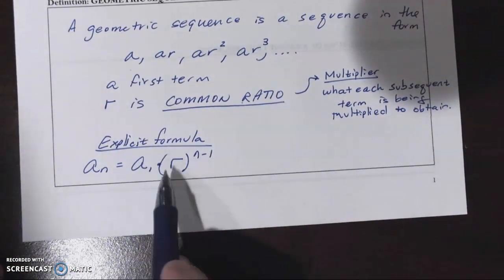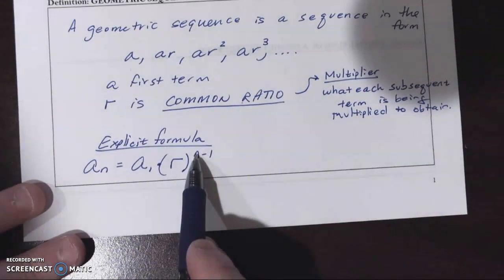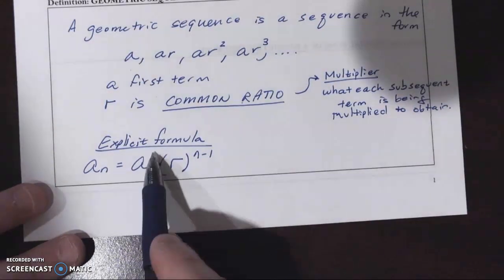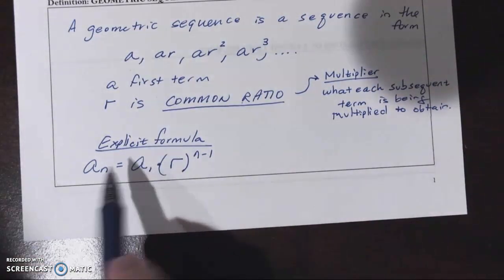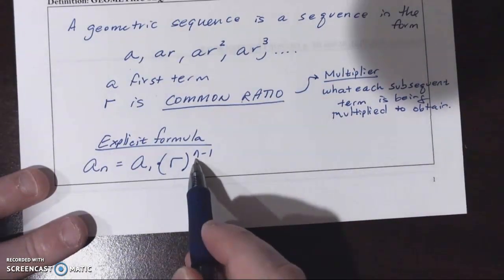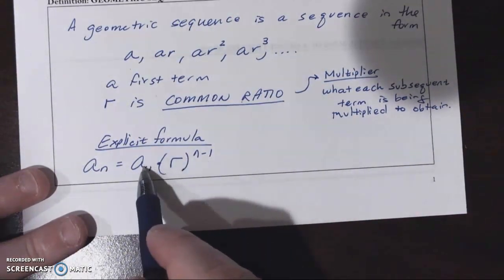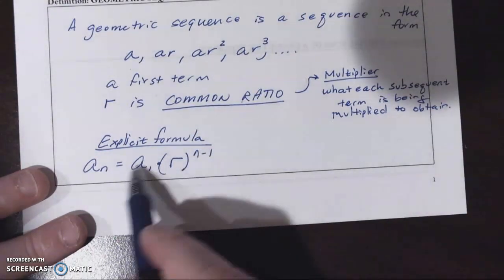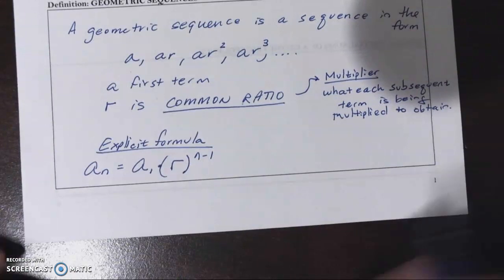So if we plug in the first term, the one would go there, one minus one is zero, R to the zero power goes away, which is why we would just be left with the first term. So that makes a lot of sense. If it was the second term, we plug in two there, and we'd basically be multiplying this term by R once. The third term we'd be multiplying the first term by R twice, and so on and so forth.